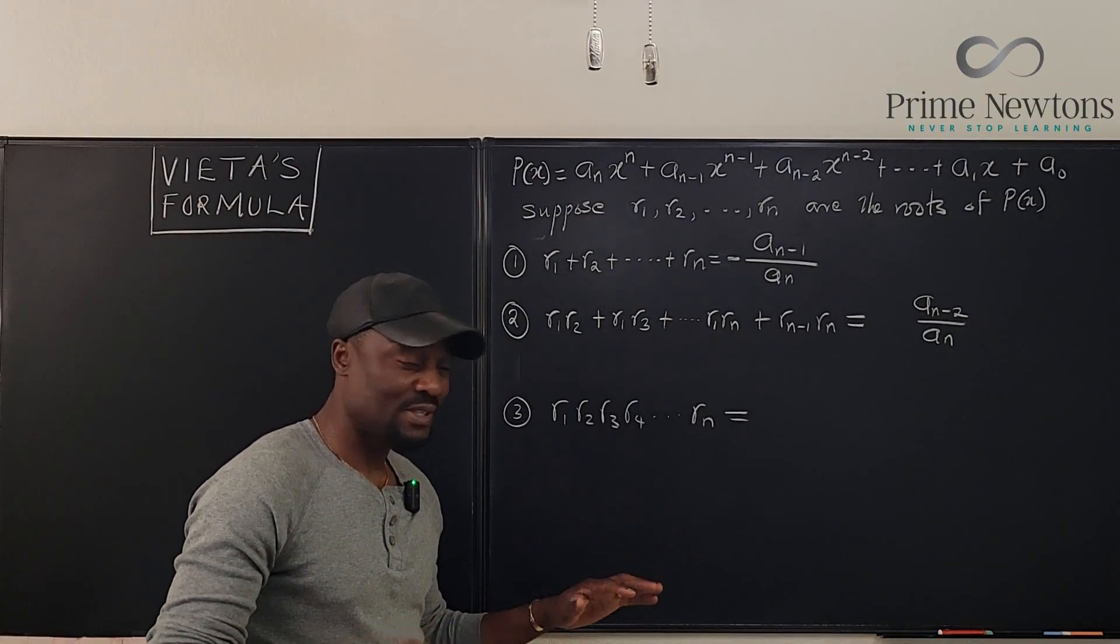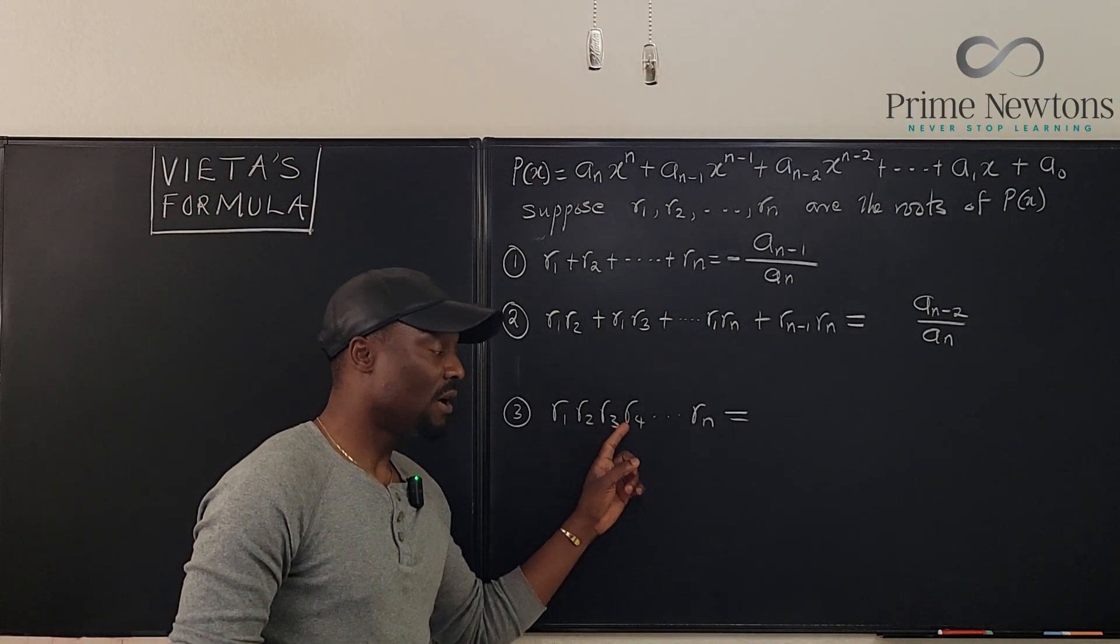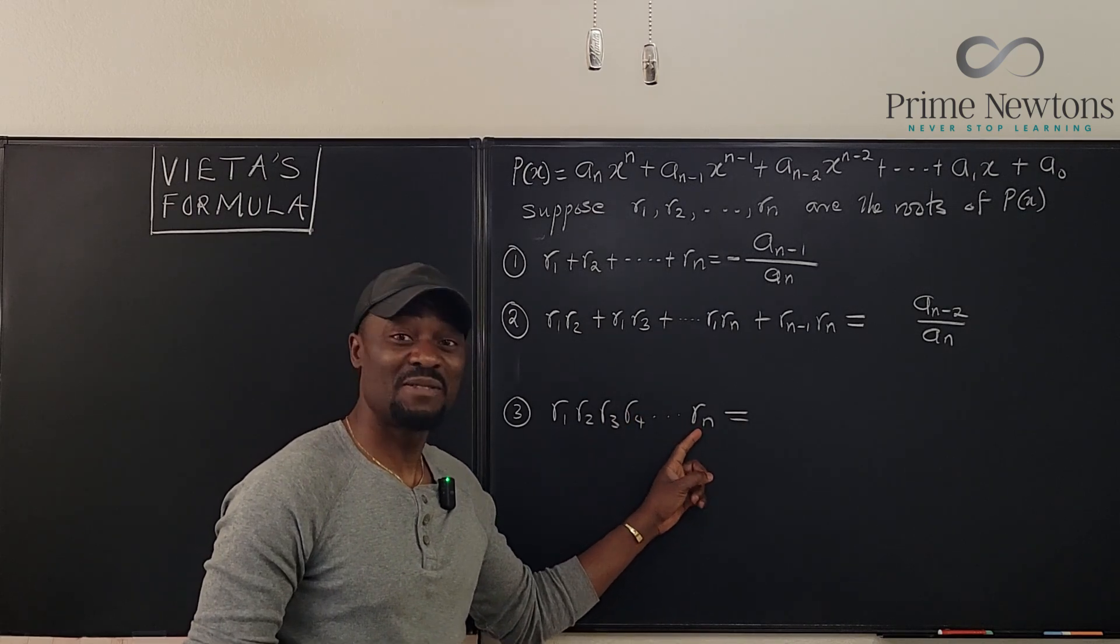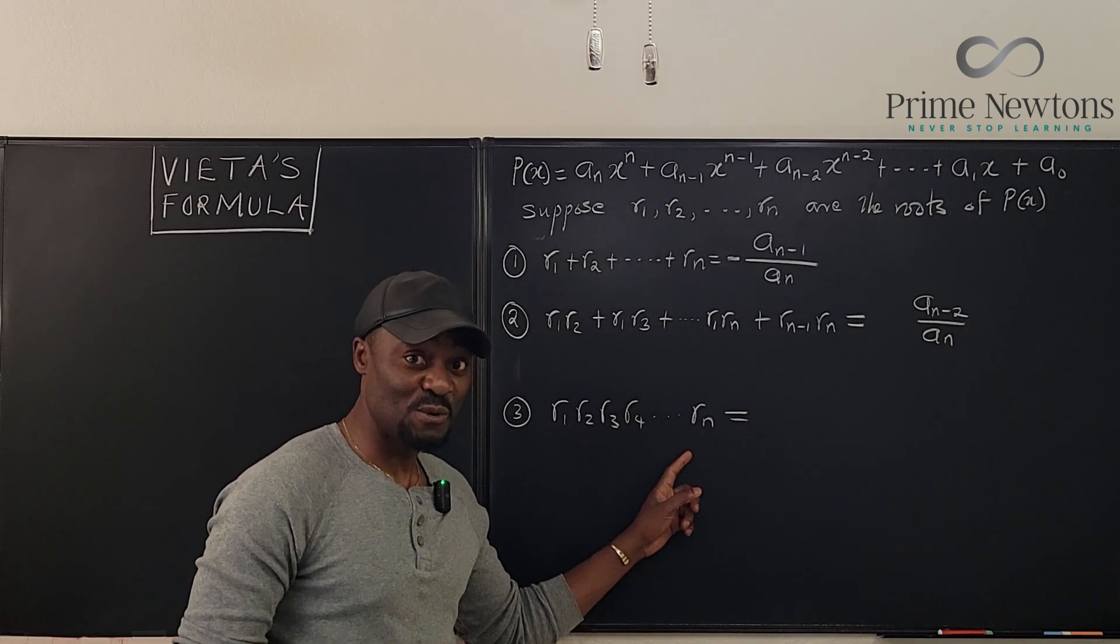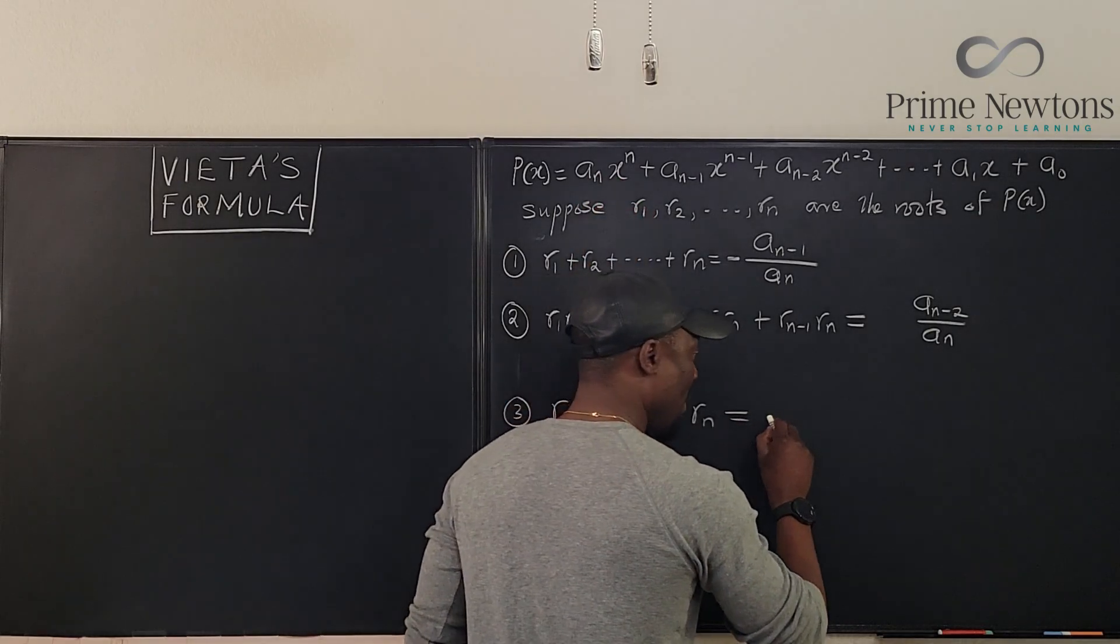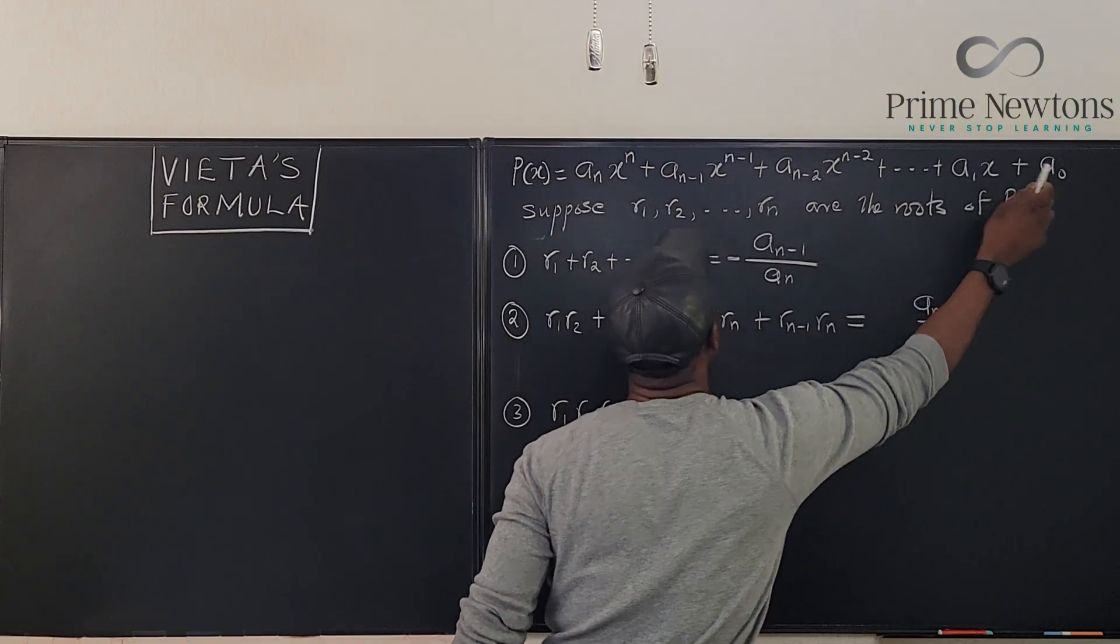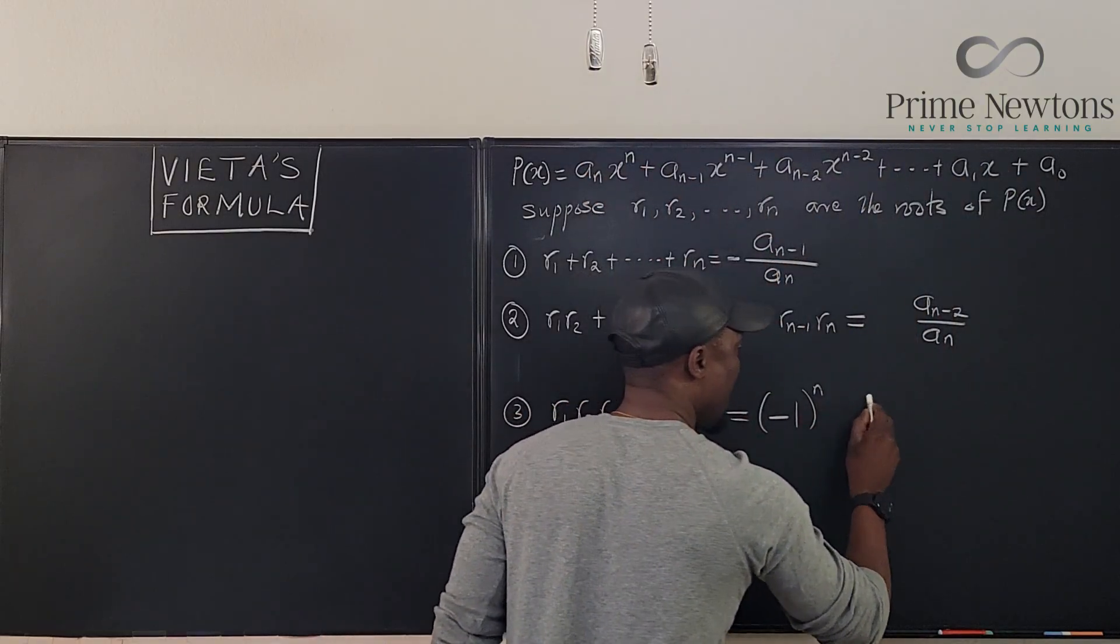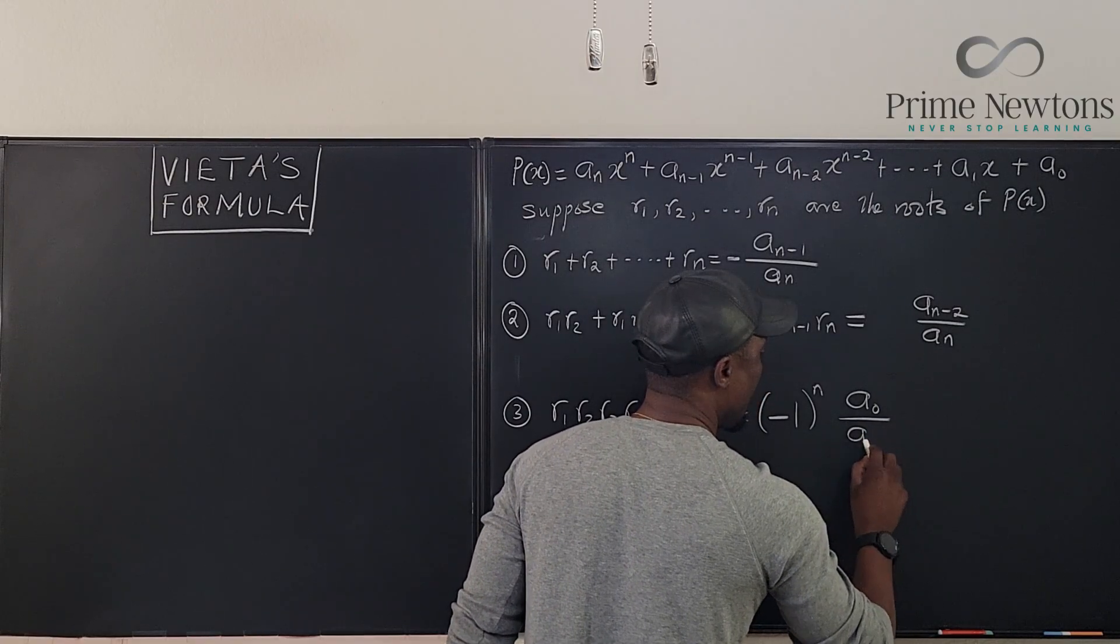If you multiply all the roots of this polynomial, r1, r2, r3, r4, you keep multiplying until you get to the very last one. Because there are n roots, because it's an nth degree polynomial, the product is always minus 1 raised to power n of the ratio of the constant to the beginning, a0 over a n.